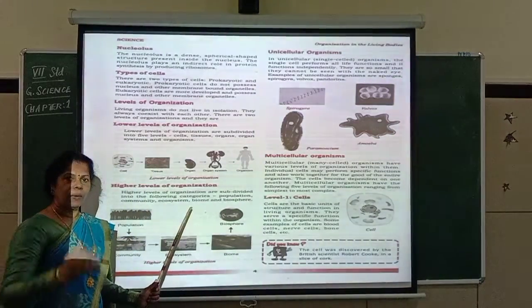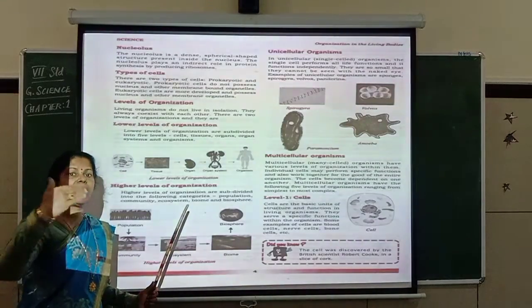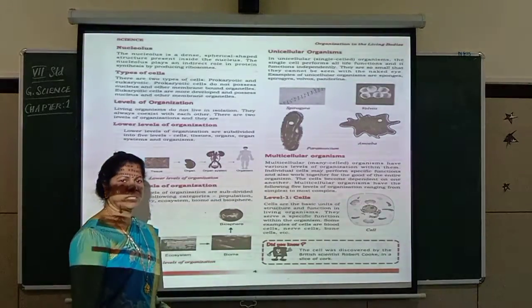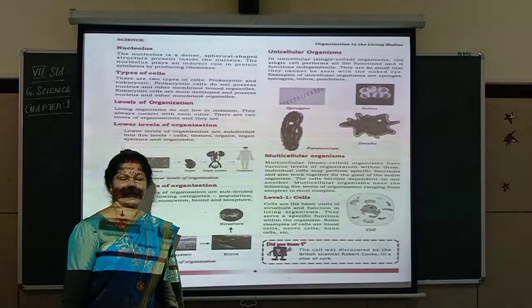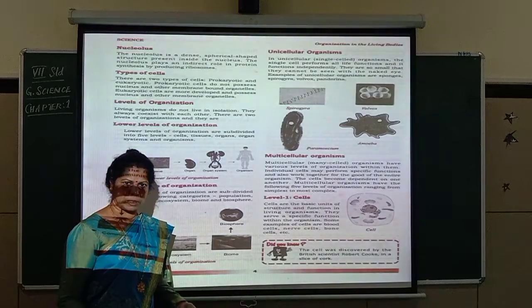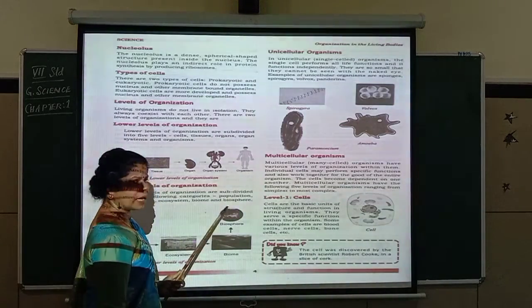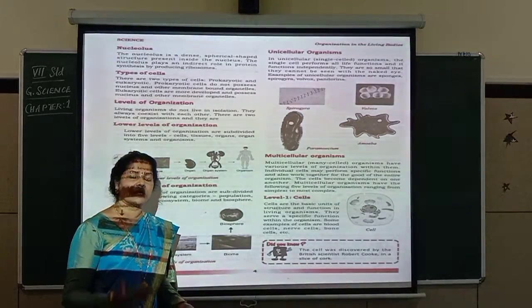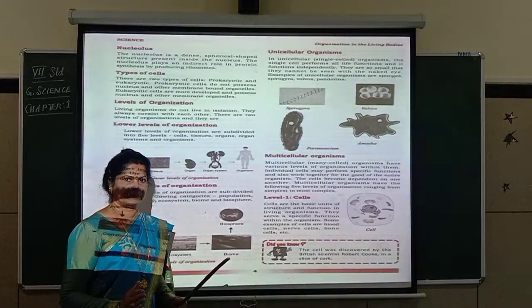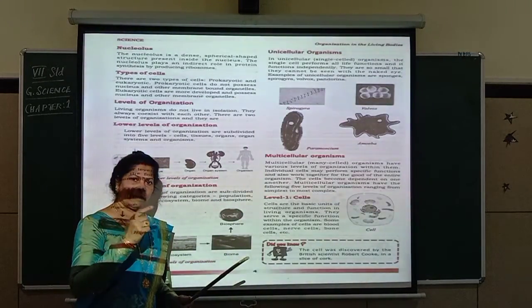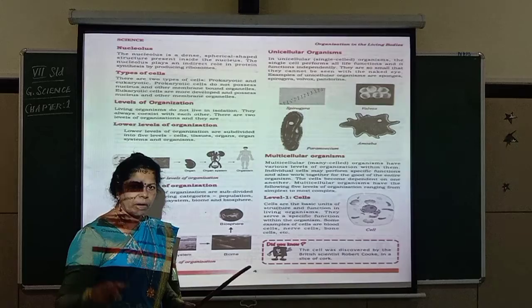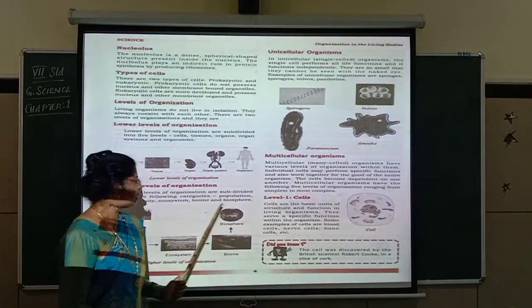Ecosystem means where living organisms have an interaction with nature — with their surroundings. We get oxygen from the environment, food by growing plants, and water from nature. There is an interaction between living organisms and non-living things in the environment. Living organisms depend on the environment for their survival — that is what we call the ecosystem.